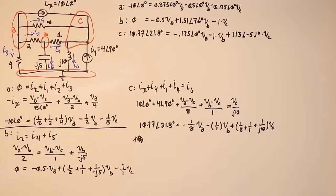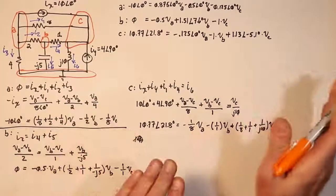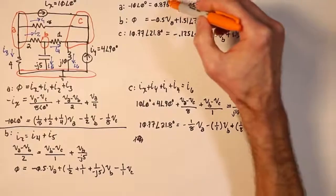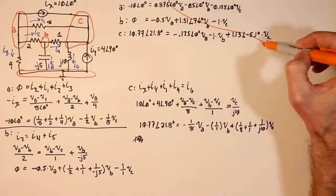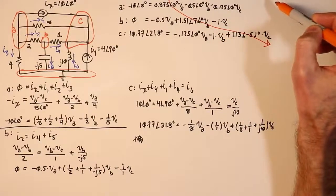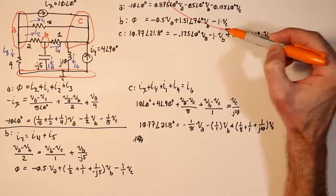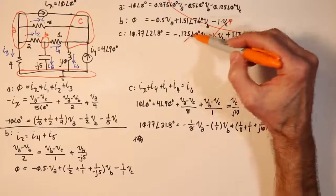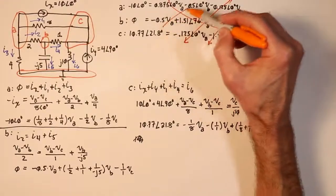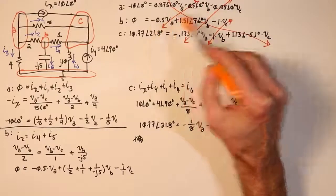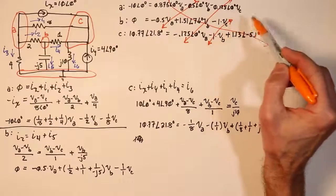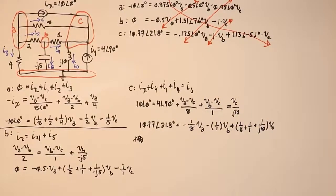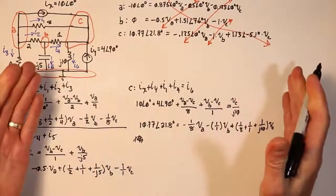The next thing we want to do is check for diagonal symmetry. The diagonal goes from A through B through C, and we look off the sides. We have minus 0.5 and minus 0.5, minus 0.125 and minus 1, and then minus 1. So we have our symmetry — beautiful.